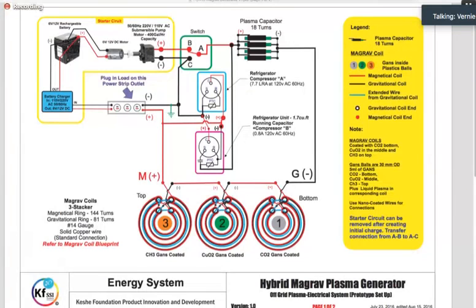These are in the middle, these are Gans balls, which on the upper right we have a legend there, what's in there. Gans inside the plastic balls. For the number one, this is CO2 Gans coated, or the middle part. Copper oxide Gans coated, and on the topmost, CH3 Gans coated.